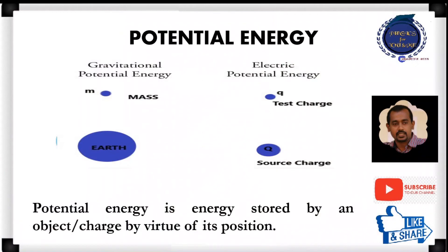Do you remember what is the meaning of potential energy? The potential energy is energy stored by an object by virtue of its position. When we consider an example of an object placed on the surface of the earth, it will possess gravitational potential energy. So when we move that object from one position to another, work has to be done against the gravitational forces, and this work done by the external force against the gravitational force is stored in the form of its gravitational potential energy.